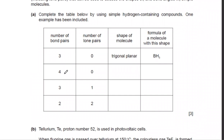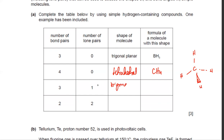In the summary table: four bond pairs and zero lone pairs is tetrahedral — an example is CH4, where carbon makes four bonds as far apart as possible. Three bond pairs and one lone pair gives trigonal pyramidal — NH3 is a good example, the same shape as CH4 except one side has a lone pair instead of a bonded atom.